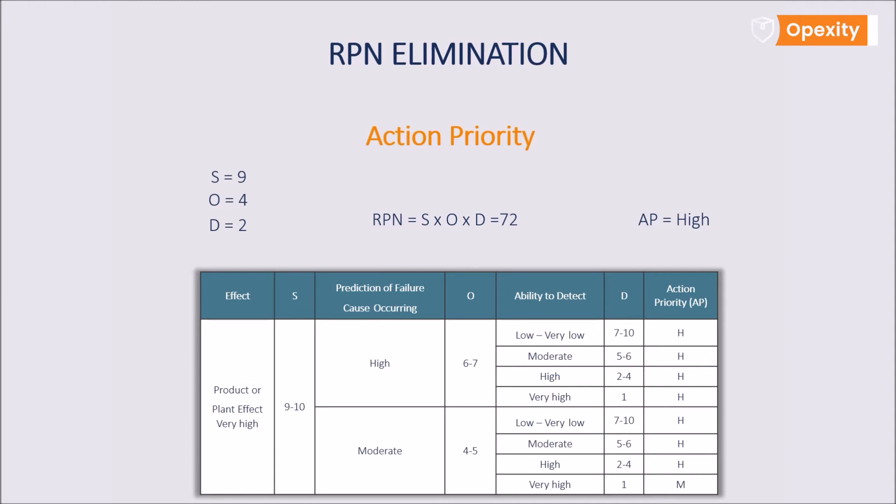The table includes all combinations of severity, occurrence, and detection values with their respective priority. As you can see, if the severity value is 9 and the occurrence is 4 and the detection is 2, then the action priority is high.